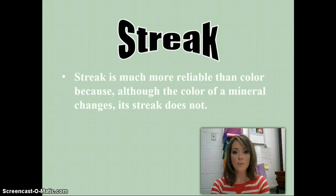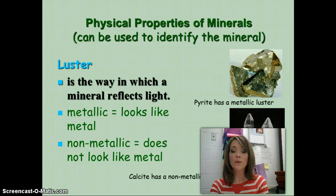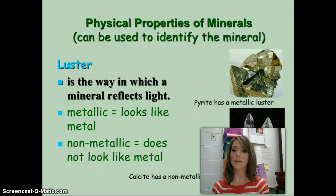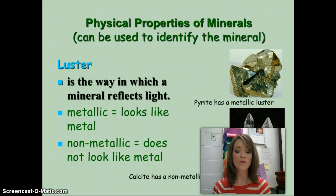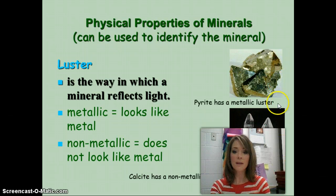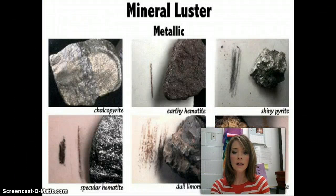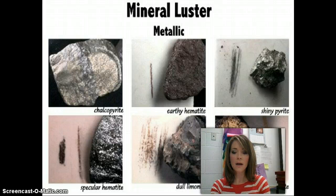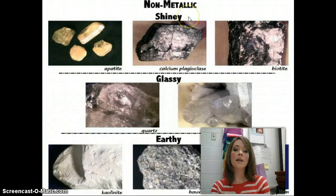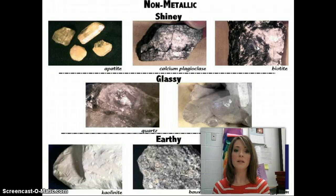Our third property is luster, which refers to the way a mineral reflects light. Some minerals reflect light in a metallic way — they look like a piece of metal. Others don't look metallic at all. Those are our two main groupings: metallic and non-metallic. Within the non-metallic group there's lots of variation. If it looks like a piece of metal — like pyrite — describe its luster as metallic. If it doesn't, it's non-metallic. Non-metallic minerals can be shiny but not look like metal, glassy like a piece of glass, or earthy — just looking like a typical dull rock.